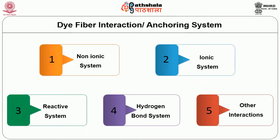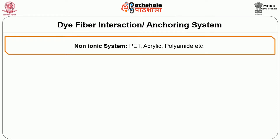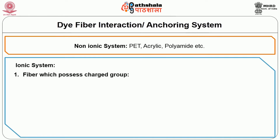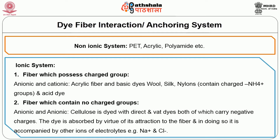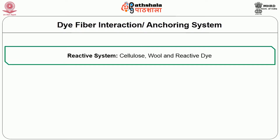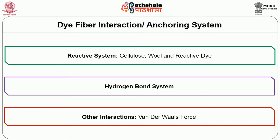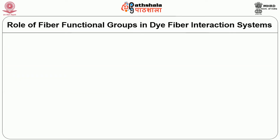Dye and fiber interactions can be divided into non-ionic systems, ionic systems, reactive systems, hydrophobic systems, and other interactions. Non-ionic systems include polyester, acrylic, and polyamide dyeing. Ionic systems involve fibers which possess charged groups — anionic or cationic — such as acrylic fibers with basic dyes, and wool, silk, nylon with acid dyes. Fibers that contain no charged groups, like cellulosics, are dyed with direct and vat dyes, both of which carry negative charges. The dye is absorbed by virtue of its attraction to the fiber, accompanied by the ions of electrolytes such as sodium chloride. Reactive systems involve cellulose and wool with reactive dyes, and hydrogen bond systems and van der Waals forces also play a role.